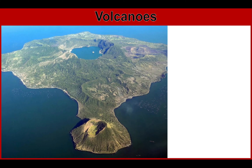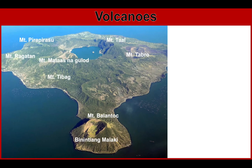Let's focus on Taal Volcano, which you can see in this picture. Taal Volcano is a complex volcano which is made up of a lot of craters. These craters are formed because of eruptions. We have Mount Pirapirasu, Mount Ragatan, Mount Mataas Nagulod, Mount Tibak, Mount Taal, Mount Tabro, Mount Balontok, and Mount Binintiang Malaki. Since we have a lot of craters, eruptions may transfer from one crater to another. In the books, what you see is the Binintiang Malaki crater of Taal, because it's the most visible at the highest part of Taal in Tagaytay.